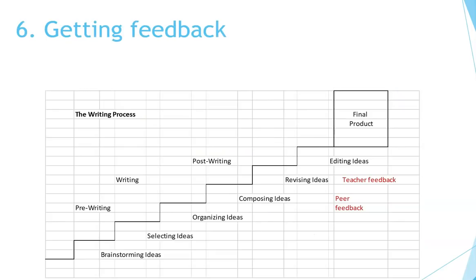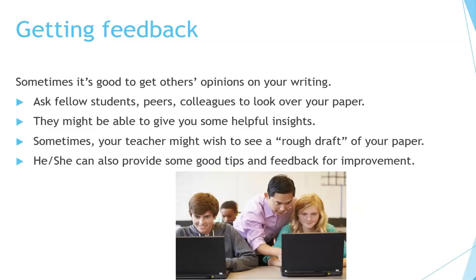Step number six is getting feedback. There are two kinds of feedback: peer feedback and teacher feedback. These can be important in helping you get your paper to the final stage. Sometimes it's good to have others' opinions on your writing.